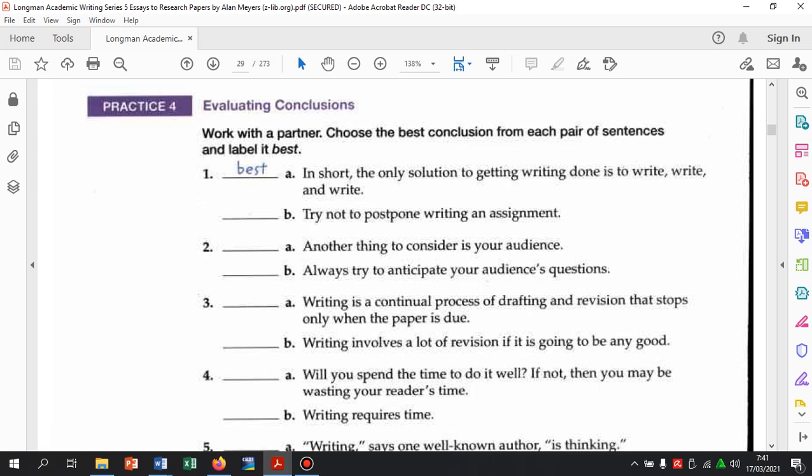Kalau yang A, kenapa? Kenapa tidak yang A? Karena ketika kita baca another thing to consider is your audience, berarti dia bukan kalimat utama. Berarti ada hal yang dibandingkan dengan sebelumnya. Jadi another thing itu adalah hal komparasi tambahan. Jadi, dia tidak cocok untuk kesimpulan. Karena dia tidak bersifat general. Always try to anticipate your audience's question ini lebih kepada rekomendasi. Memberikan rekomendasi atau ajakan. That's why B is the best one.